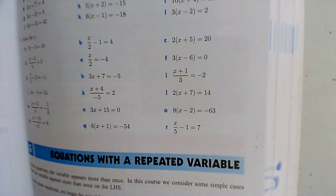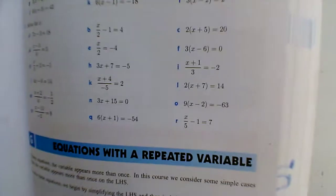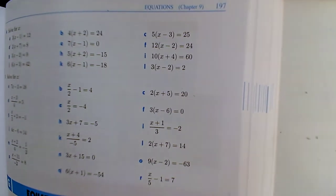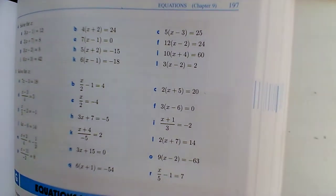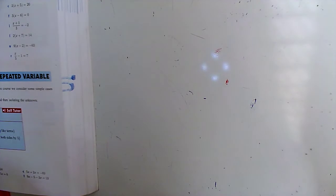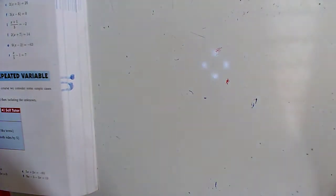A quick video to go through at lightning speed question 5 from the MYP2 book, that's page 197, chapter 9, equations. I'm just going to run through these at lightning speed. Apologies if you hear Peppa Pig in the background — my four-year-old daughter.